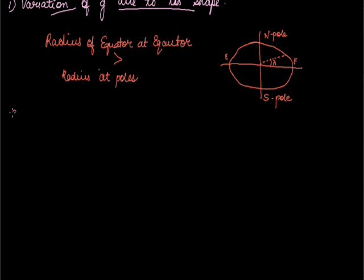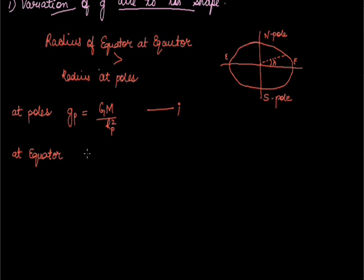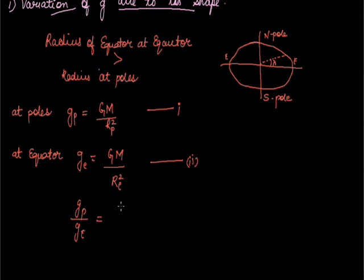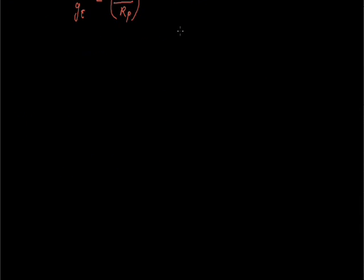The gravity at poles: g_p equals GM upon r_p squared. This is our first equation. At equator: g_e equals GM upon r_e squared. This is our second equation. If we take the ratio of equation 1 and 2, that is g_p upon g_e, the final equation will be GM upon r_e upon r_p whole squared. As we know that r_e is greater than r_p, so g_p, the gravity at poles, is greater than the gravity at equator.